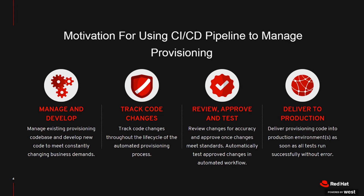We're also implementing procedures to review, approve, and test the code. This basically enforces the fact that we have to implement process around code so that it doesn't just get pushed into production without having any sort of oversight whatsoever. And finally, the ultimate goal is that once the code has been approved, tested, reviewed, and developed, we finally deliver it into an operational state — into production.